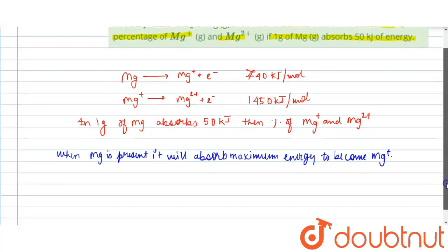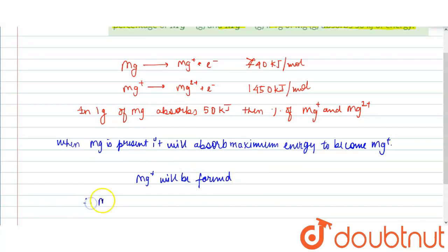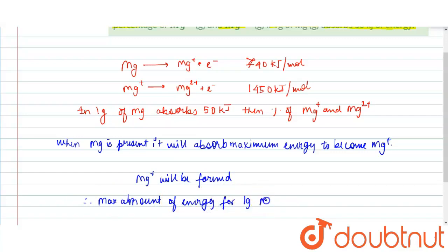When magnesium is present, it will absorb maximum energy to become Mg⁺. Therefore, first of all Mg⁺ will be formed. The maximum amount of energy for 1 gram of Mg to form Mg⁺ would be calculated as follows.